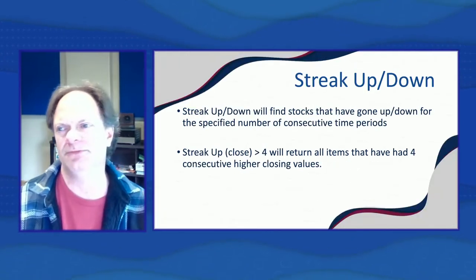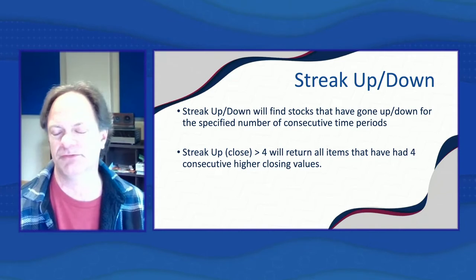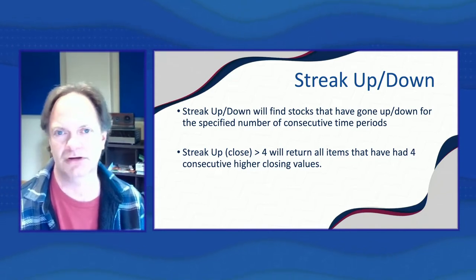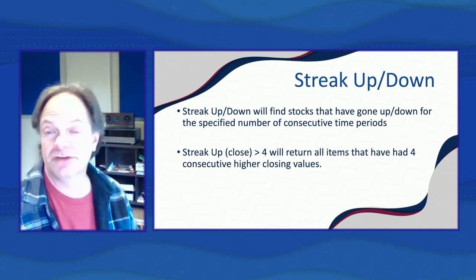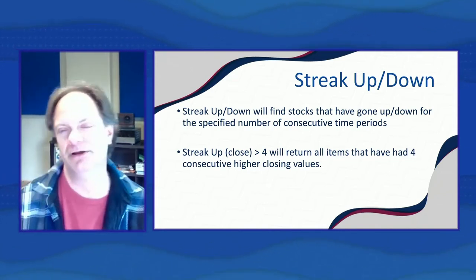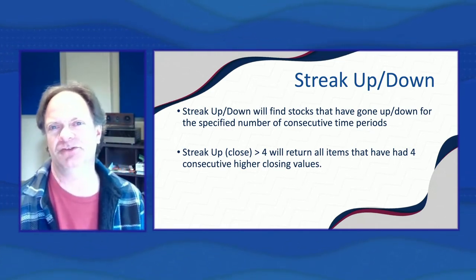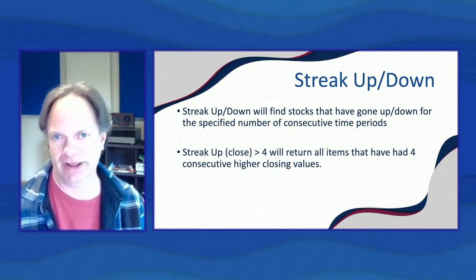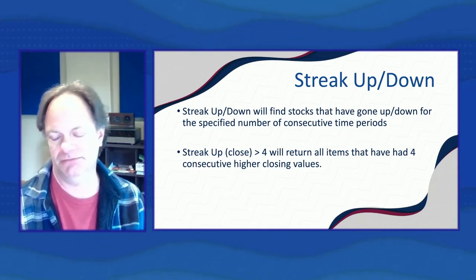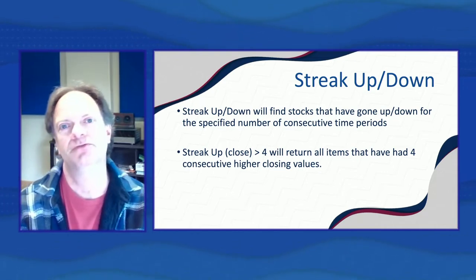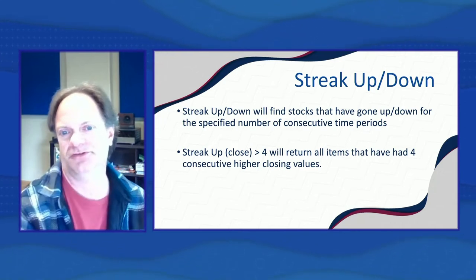Streak up and streak down is similar to your favorite sports team being on a five-game winning streak or an eight-game losing streak. It basically looks for consecutive ups or downs to find stocks that are on a winning streak or a losing streak.